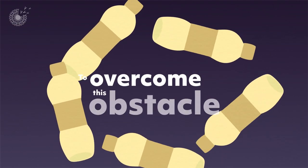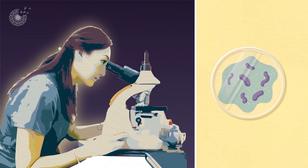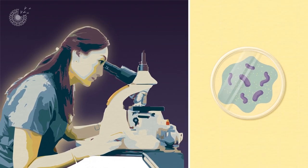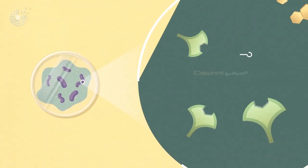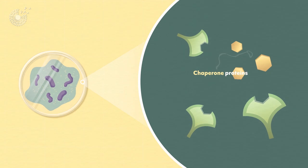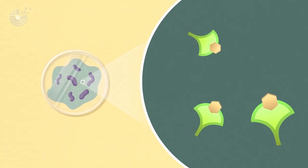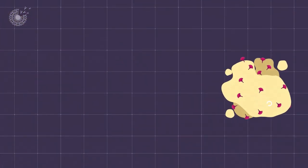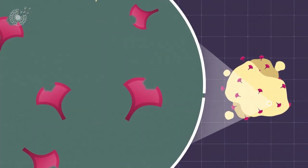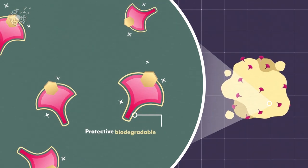To overcome this obstacle, scientists at Entropic Materials have learned from another amazing aspect of how life works. Inside organisms, specialized molecules called chaperone proteins fit together with enzymes to switch them on or move them where they need to be. Entropic Materials mimics this approach to chaperone enzymes through the plastic production process inside protective biodegradable covers.